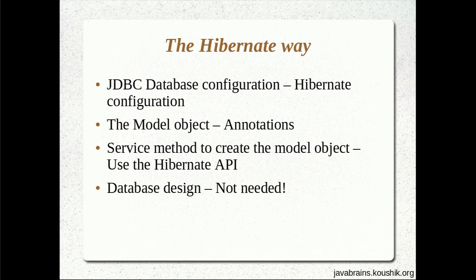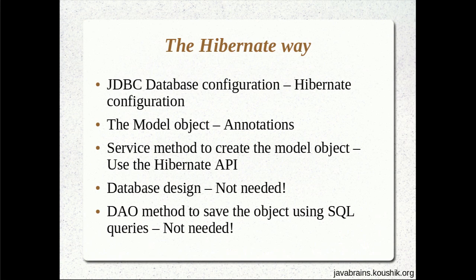Database design is not needed. You don't really have to create a table for every object. As long as you configure the model object the right way, Hibernate creates the tables itself. And finally, the last point — creating the data layer where you map objects to queries — is the biggest challenge when writing data layer code for converting objects into a relational model. This major step is not needed when using Hibernate. The service method directly calls the Hibernate APIs, which take care of saving the object without writing DAO methods, pulling objects apart, writing SQL queries, or executing them.